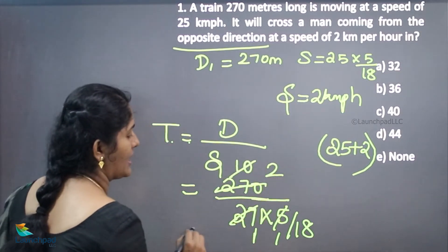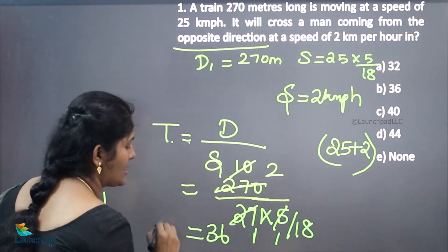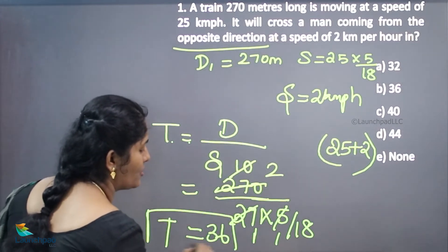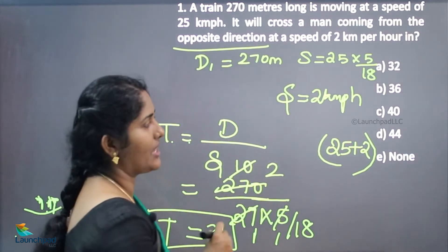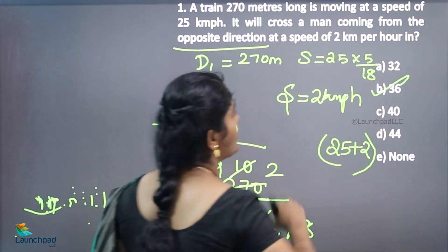So 18 into 2 is 36 seconds time taken to cross the man. The time is 36 seconds. Your option B is correct.